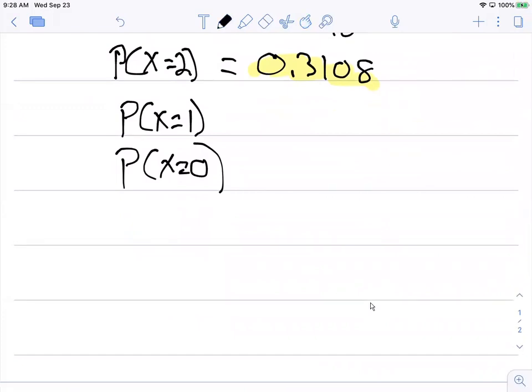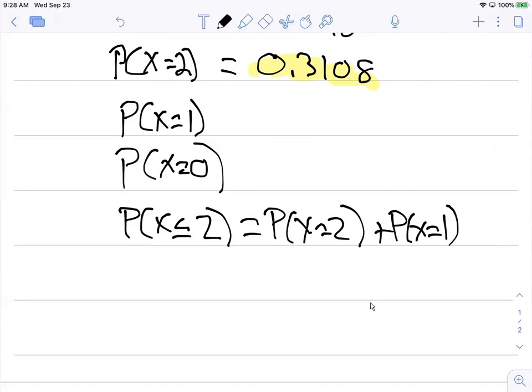We can say that the probability that X is less than or equal to two equals the probability X is two, plus the probability X is one, plus the probability that X is zero.